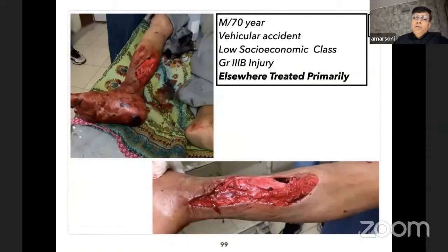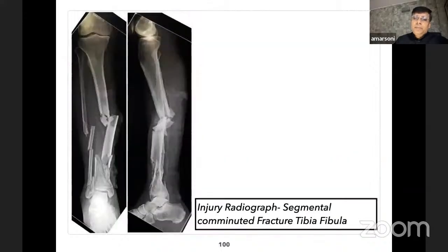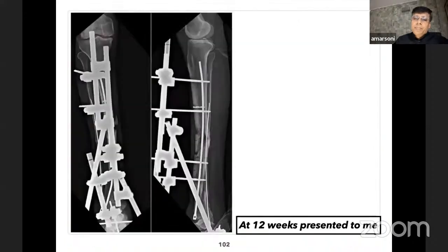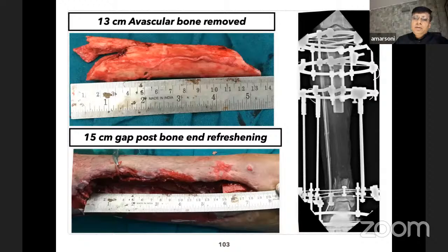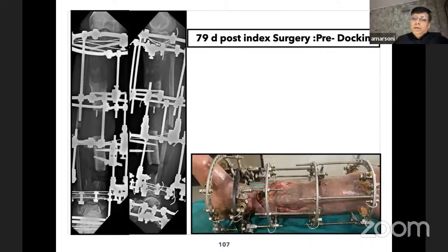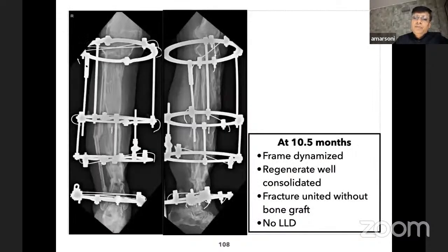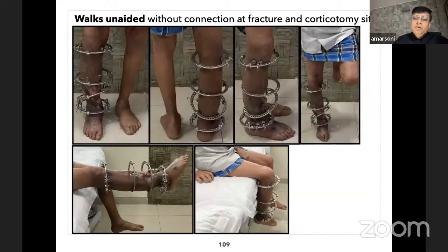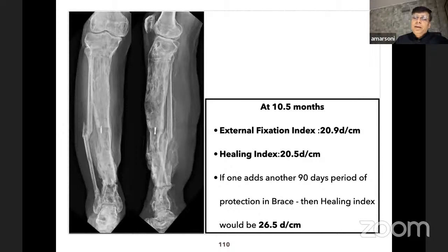An elderly gentleman of 70 years—just because of age, amputation was advised at another center. Low socioeconomic class, Grade 3B injury treated initially with external fixator, large avascular bone piece. This created a 13 to 15 centimeter bone gap post-debridement. Dual corticotomy was done. The proximal part allowed tandem trifocal osteosynthesis; carbon ring at ankle for better radiological assessment and a foot ring to prevent equinus. Frame was removed at ten and a half months with healing index of 21 days per centimeter.